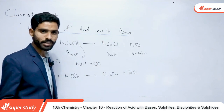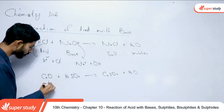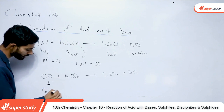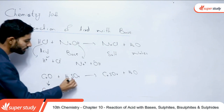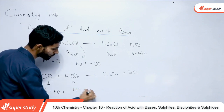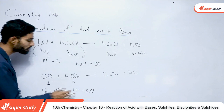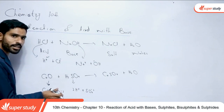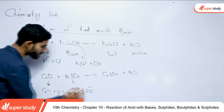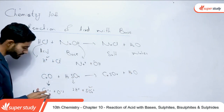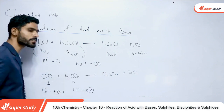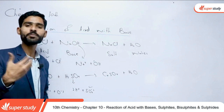If you ionize copper oxide, you will get Cu²⁺ ions and O²⁻ ions. Sulfuric acid gives H⁺ ions and SO₄²⁻ ions. The H⁺ ions combine with oxygen to form water. The SO₄²⁻ ions mix with copper ions to produce copper sulfate.